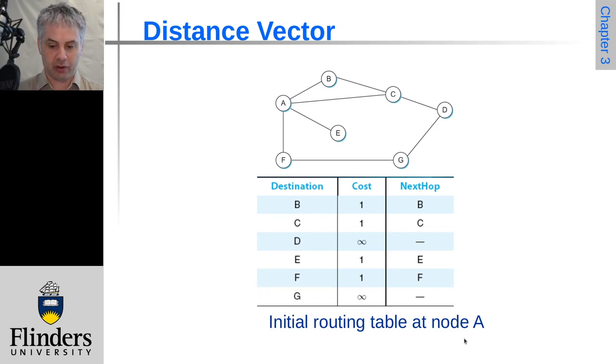So the routing table for node A will be something like this initially. The destination of B, which is directly connected, has a cost of one and the next hop is B. Indeed, at the moment, it's only direct links, so the next hop and the destinations are all the same for those where there is a route. Those which have no route, we have no known next hop and the cost is infinite. At this point, A knows how to get to B, C, E and F.